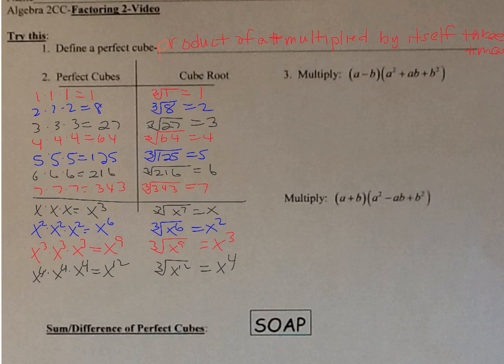Hopefully you see a pattern: the exponents here are all multiples of 3. To find the cube root, take the exponent and divide by the index — 6÷3=2, 9÷3=3, 12÷3=4. We can keep going with this pattern.